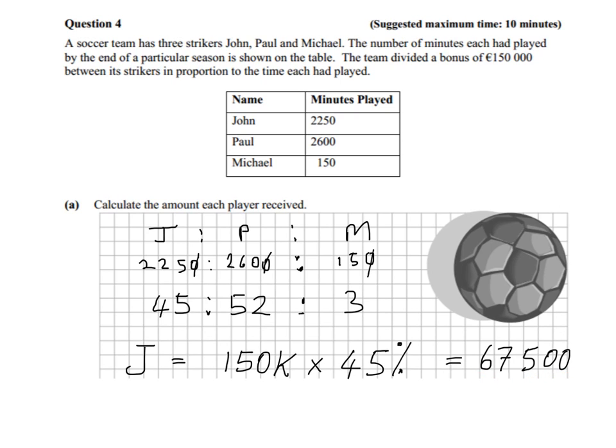Now we're going to concentrate on Paul. Paul has 52% of £150,000, so we're going to multiply £150,000 by 52%, which gives us £78,000. Michael will just be 3% of £150,000, which works out at £4,500. So now we've worked out what the three players receive in terms of money, which is what the question asks us to do.